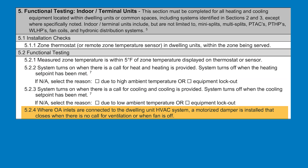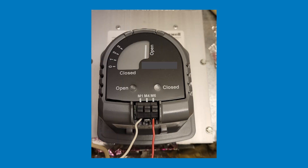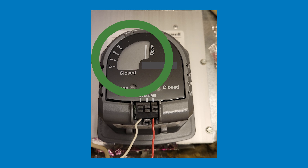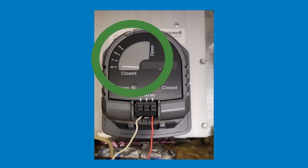Section 5.2.4 is applicable where an outdoor air inlet or duct is connected to the dwelling unit HVAC system. Confirm that a motorized damper is installed that closes when there is no call for ventilation or when the fan is off. Locate the outdoor air damper and confirm you understand where the indicator is for the open and closed positions, then confirm it is open when there is a call for outdoor air and closes when there is no call for outdoor air or when the fan is off.